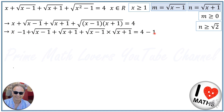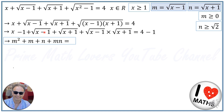We now replace all the terms with M and N. Since M equals radical X minus 1, then X minus 1 equals M squared. So the equation becomes M squared plus M plus N plus M times N equals 4 minus 1, which is 3.